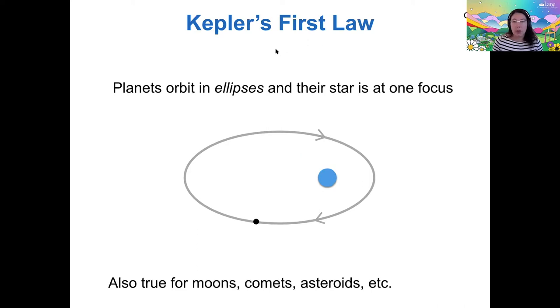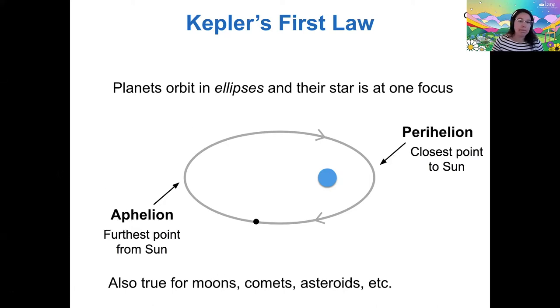This first law doesn't only govern the orbits of planets. It also holds true for moons, for comets, for asteroids, etc. So for a moon, the planet is at one focus.